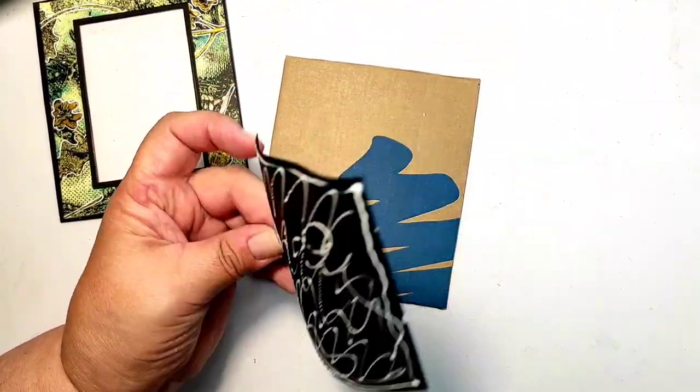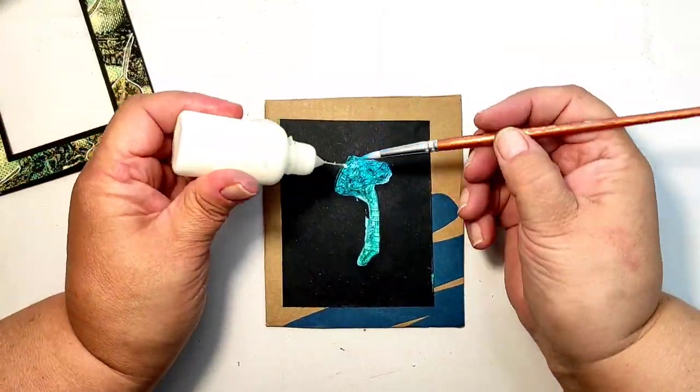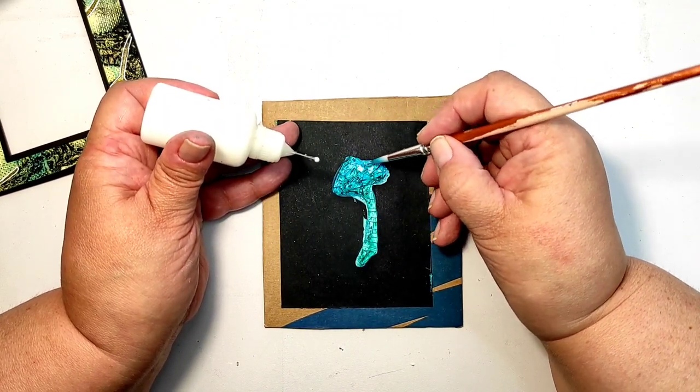I colored it using turquoise ink spray and I'm gluing the black piece of paper to my background. And now to the fun part decoration.